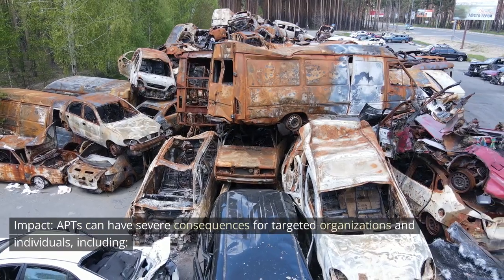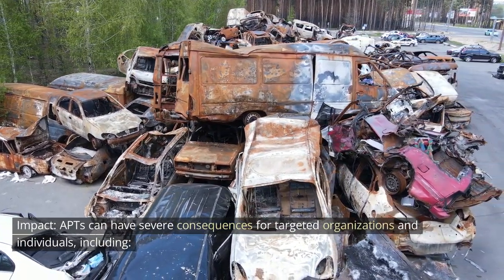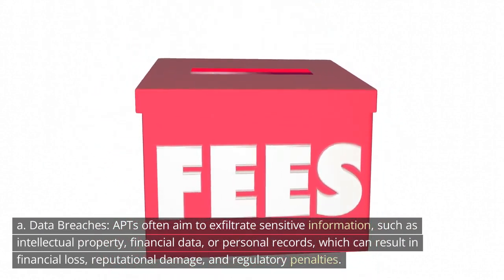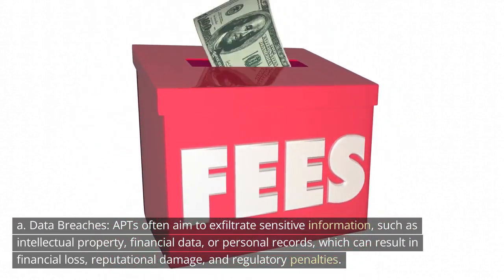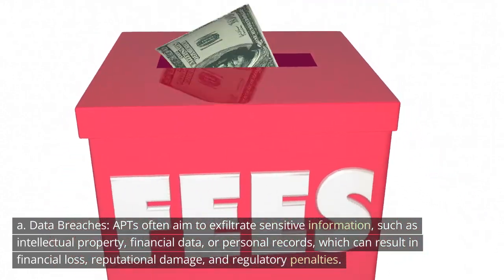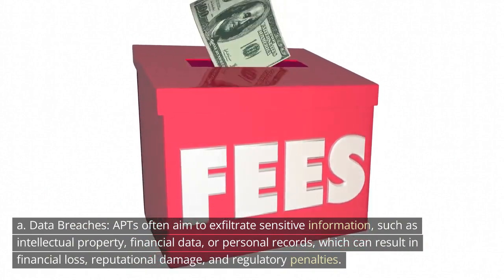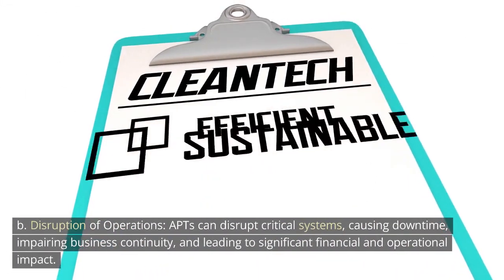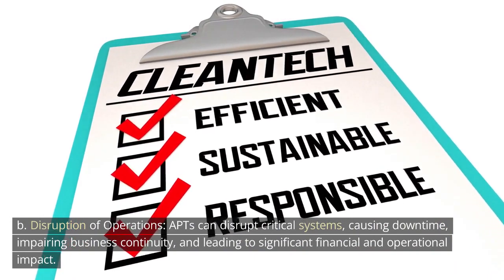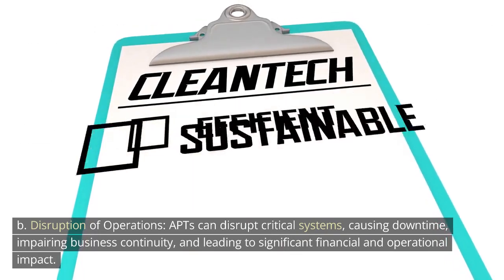APTs can have severe consequences for targeted organizations and individuals. Data breaches: APTs often aim to exfiltrate sensitive information, such as intellectual property, financial data, or personal records, which can result in financial loss, reputational damage, and regulatory penalties. Disruption of operations: APTs can disrupt critical systems, causing downtime, impairing business continuity, and leading to significant financial and operational impact.